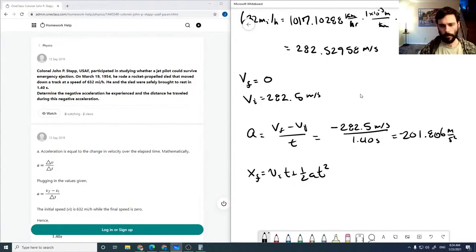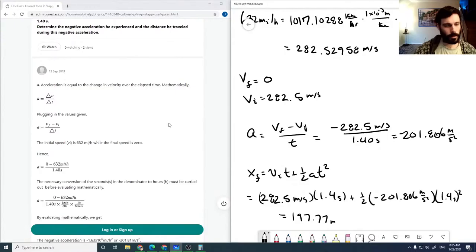This equals 282.5 meters per second times 1.4 seconds, plus the acceleration times 1.4 seconds squared, which comes out to be 197.77 meters.